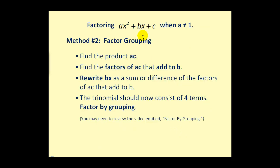First we notice that a is not a common factor. We find the product ac. Then we list the factors of ac that add to b. Then we rewrite bx as a sum or difference of the factors of ac that added to b, and then we use the grouping technique. If you don't remember the grouping technique you may want to review the video entitled Factor by Grouping.